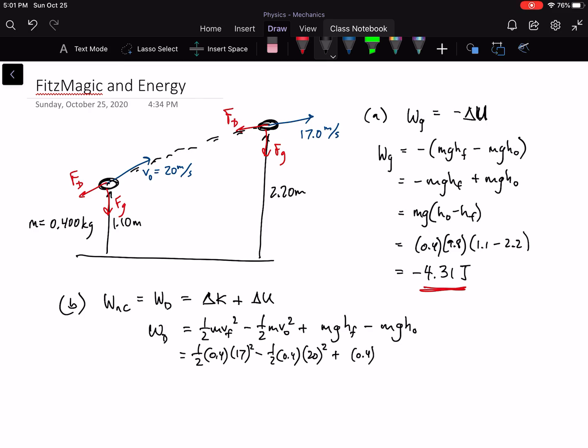Then I suppose we could have rearranged this a little, factored some things out, might have made it a little less hairy. But it's really not that bad as things go. And there we go. Plug all that in. Then you should get that it has done negative 17.9 joules of work on the football.